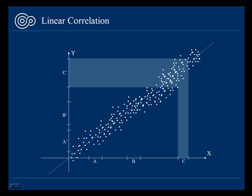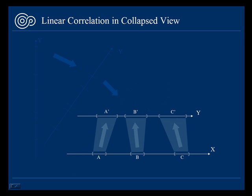In order to extend linear correlation to more general cases, let's first change the view by collapsing the y-axis to a parallel orientation as x-axis. We also remove the data points, but we keep the interval-to-interval correspondence.